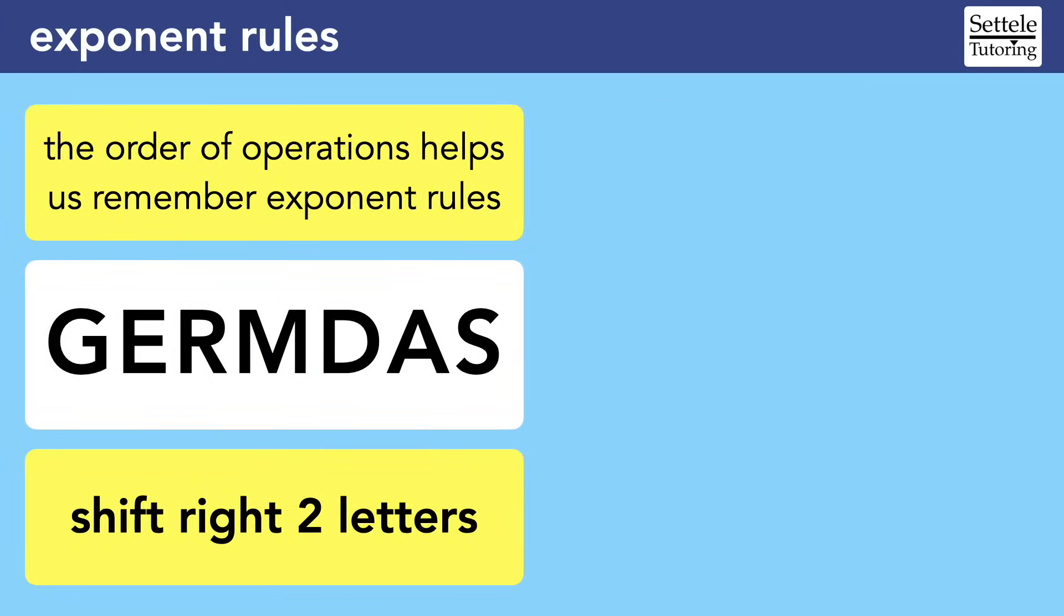Moving on, there are also exponent rules for when multiple exponents interact. The order of operations, which I abbreviate as GERMDAS, can help us memorize the rules. Remember that GERMDAS gives us the order for simplifying expressions and solving equations. The letters stand for different operations within equations. G is for groupings, E is for exponents, R is for radicals or roots, M is multiplication, D is division, A is addition, and S is subtraction. When we have complex equations to simplify, the E tells us when to use the exponent rules.